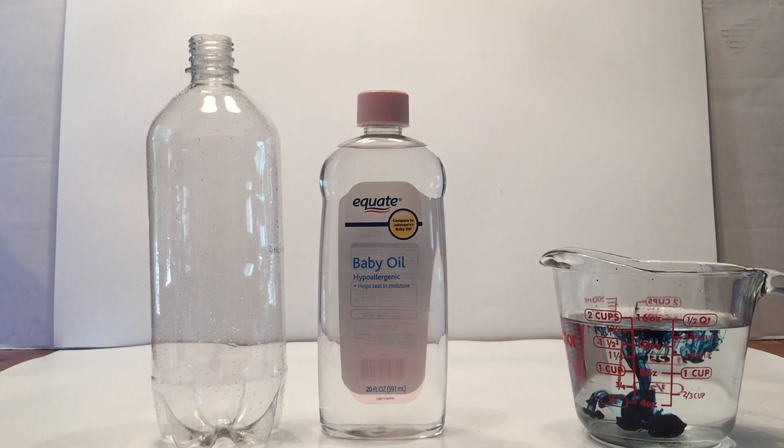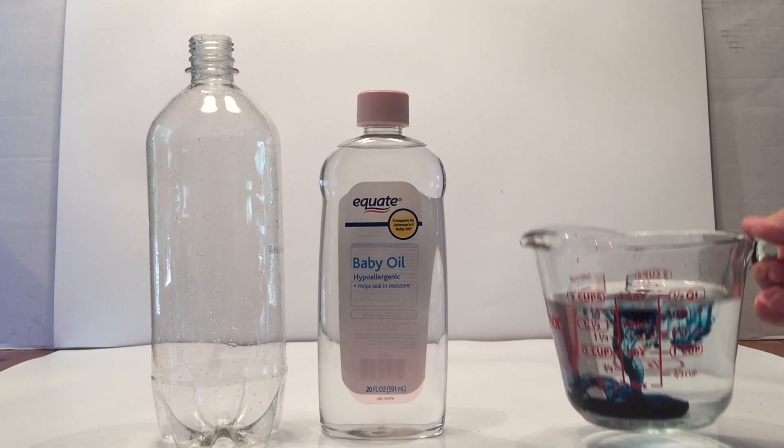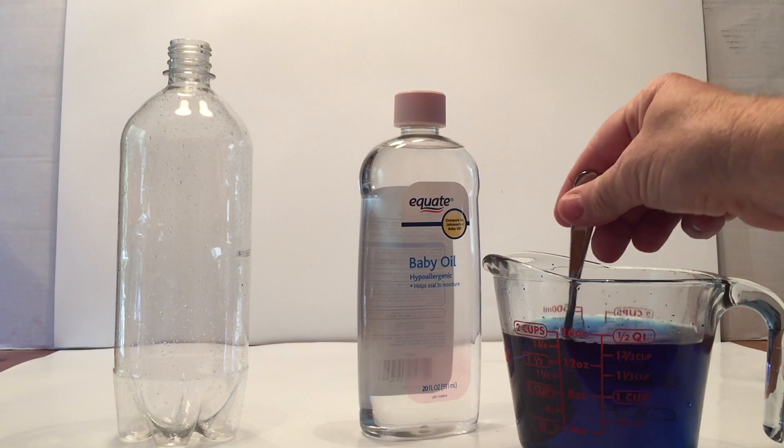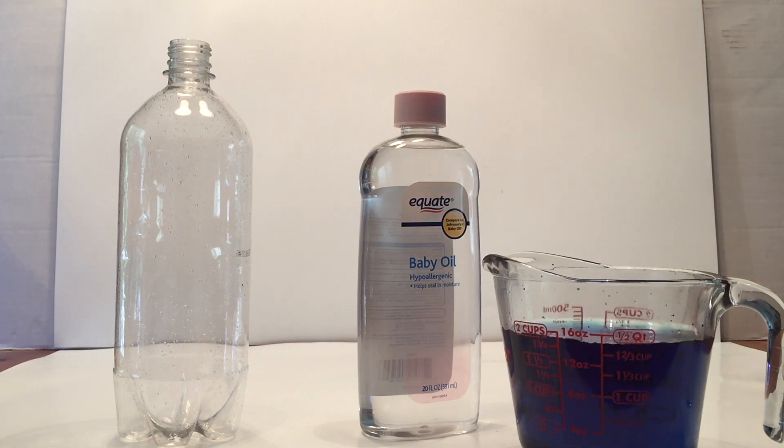The darker your water will look when we do the experiment. Once you get that in there, you're going to take a spoon and mix it up. It looks pretty dark right there. You can always add more if you'd like. It's your own preference.